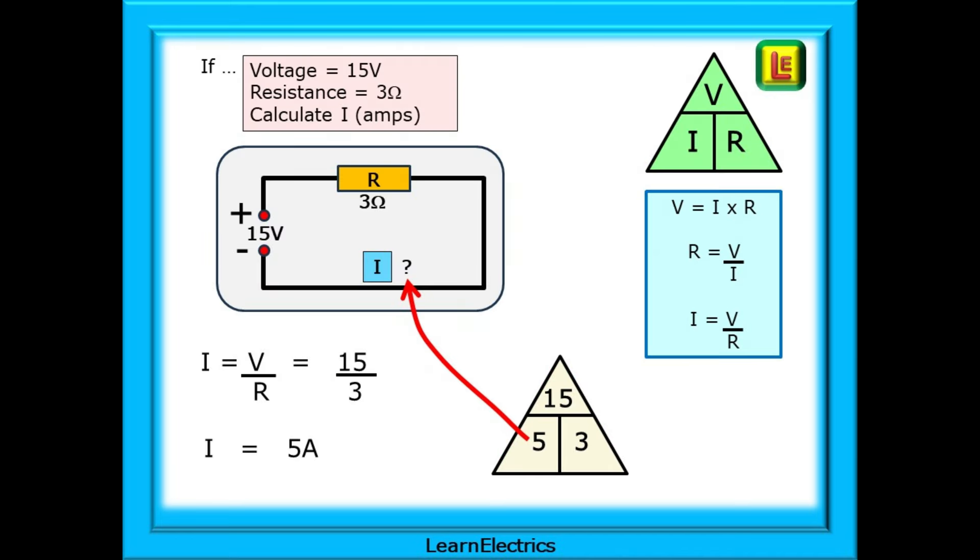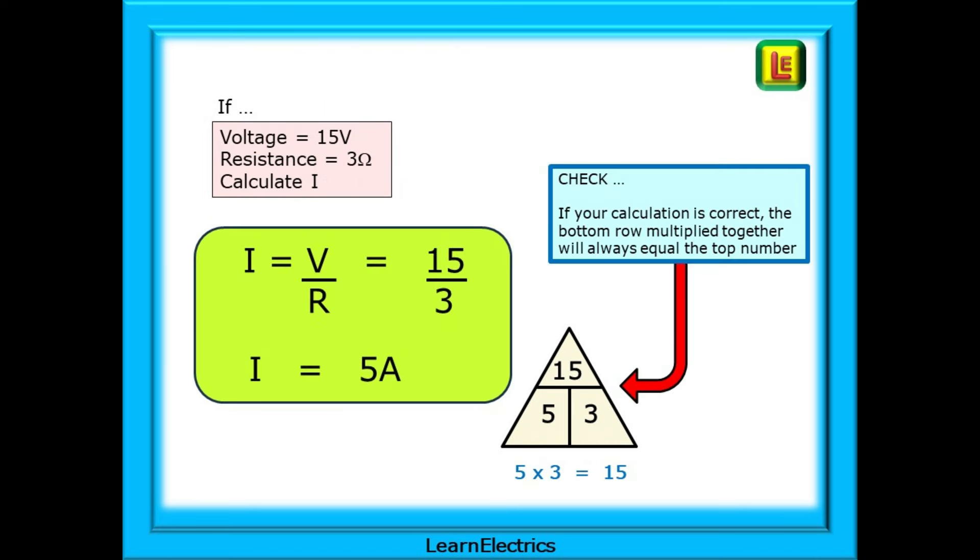Looking at an easy example, if the voltage is 15 volts and the resistance is 3 ohms, calculate I, the amps. Ohm's law tells us that the current I is voltage divided by ohms. So 15 volts divided by 3 ohms gives us 5 amps of current. A good way of checking your calculation is to realize that multiplying the two numbers on the bottom row will always give the number on the top row. 5 multiplied by 3 is 15 on the bottom row, and we also have 15 on the top row. The numbers are correct.